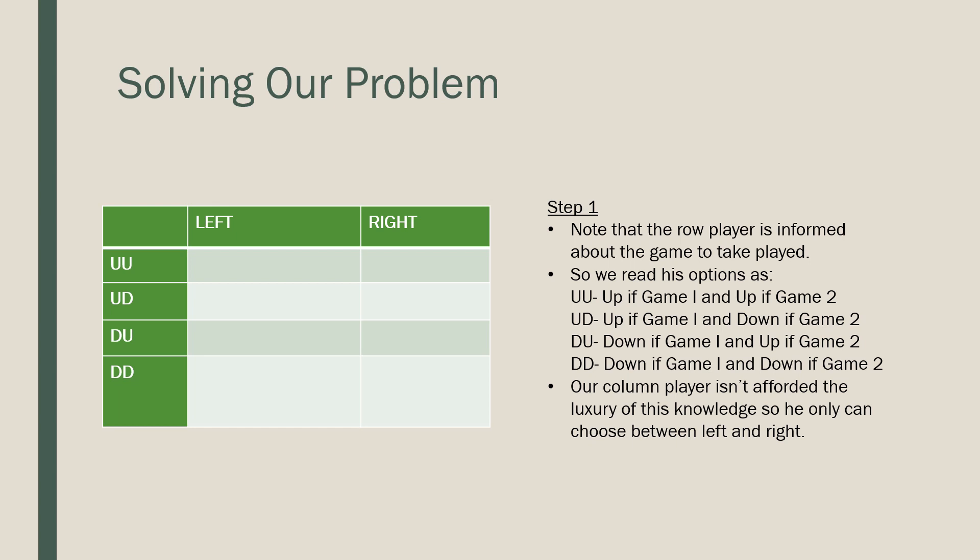This just shows it over here. If both of our players were informed, we would have this other column of LL, LR, RL, RR at the top. But right now we just have a row player informed, but our column player is not informed.